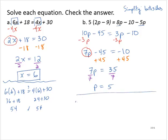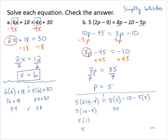Let's check that answer. Is 5 times the quantity 2 times 5 minus 9 equal to 8 times 5 minus 10 minus 5 times 5? On the left, following order of operations, I have 5 times 10 minus 9, which is 5 times 1, which is 5. On the right-hand side, I have 40 minus 10 minus 25, which is 30 minus 25, also 5. Since that checks out, p equals 5.